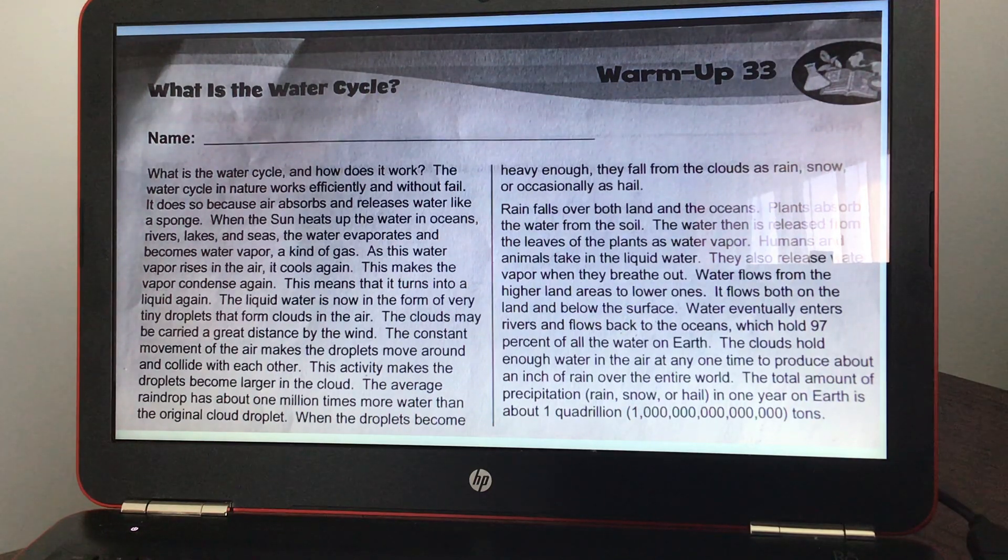The total amount of precipitation, rain, snow, or hail, in one year on Earth is about one quadrillion tons.